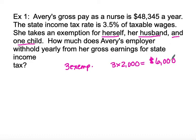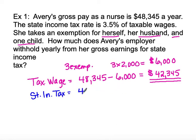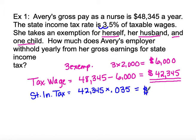She has three exemptions times $2,000 each, giving a total exemption of $6,000. From there we take her gross wage and find the taxable wage: yearly earnings of $48,345 minus exemptions of $6,000 gives a taxable wage of $42,345. Now we calculate her state income tax: we take that taxable wage and multiply by three and a half percent, converting to a decimal by dividing by 100, so we multiply $42,345 by 0.035.